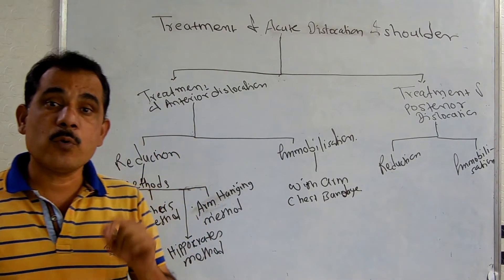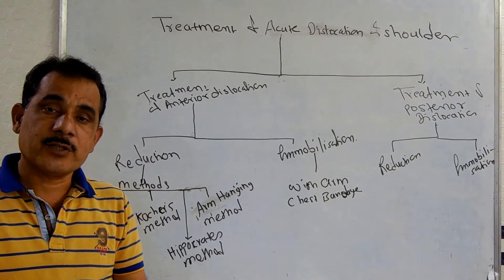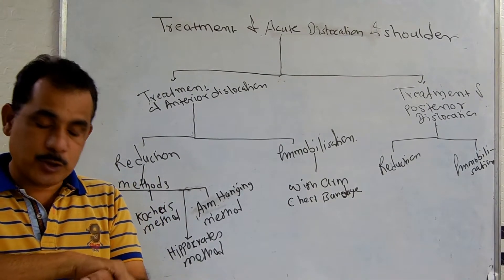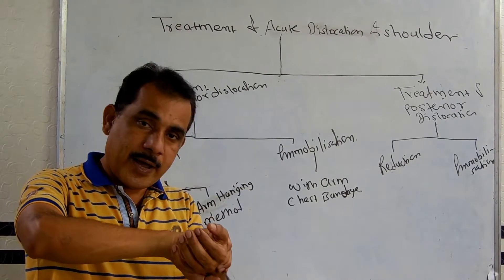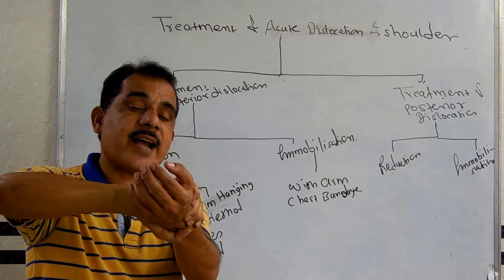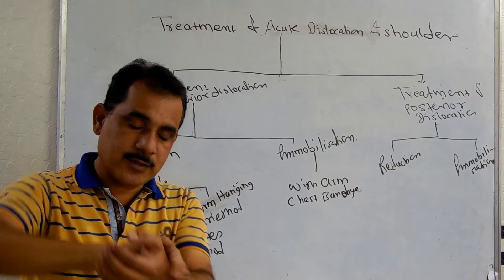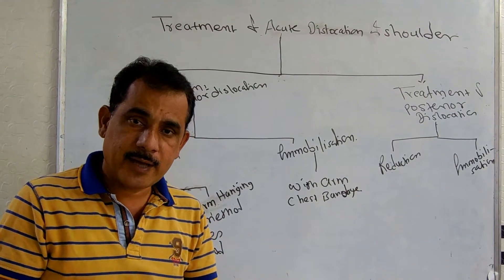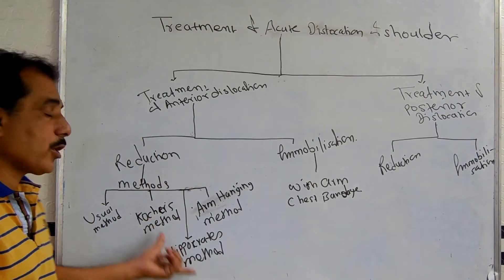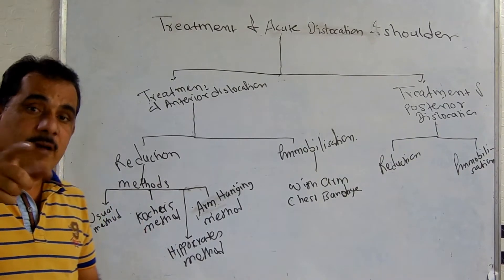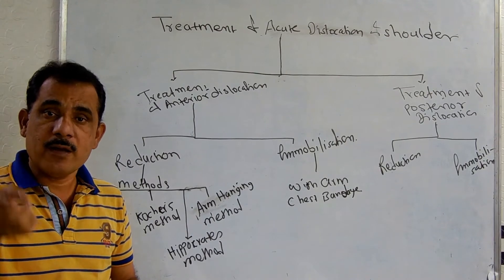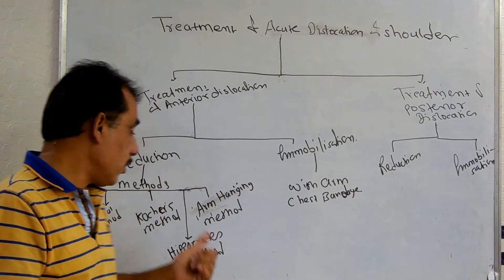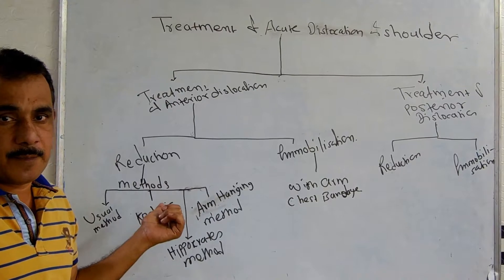The third is Hippocrates' method, which is an older method. Here the patient is asked to lie down on the floor. The surgeon holds the patient's hand and places his foot in the axilla, then gently applies traction to release the head of the humerus. The head should then be pressed backward with the other hand. This method is used if Kocher's method fails to reduce the dislocation.